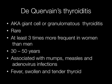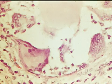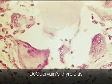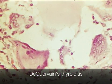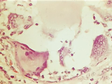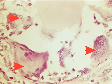De Quervain's thyroiditis is also known as giant cell or granulomatous thyroiditis. It is rare, occurring at least three times more frequently in women than men. The age at which it occurs is between 30 and 50, and it is associated with mumps, measles, and adenovirus infection. There is fever and the thyroid is tender and swollen. This is the thyroid from a patient with De Quervain's thyroiditis, showing a florid foreign body giant cell response to the colloid.